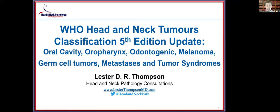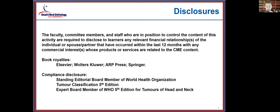It's my pleasure to continue the presentations of the new World Health Organization classification of head and neck tumors from the fifth edition. I'm going to cover a potpourri of entities within oral cavity, oropharynx, odontogenic, melanoma, germ cell tumors, metastases, and tumor syndromes. I have royalties from books, and as a compliance disclosure, I'm both a standing member of the editorial board for the WHO as well as an expert member for this particular book.